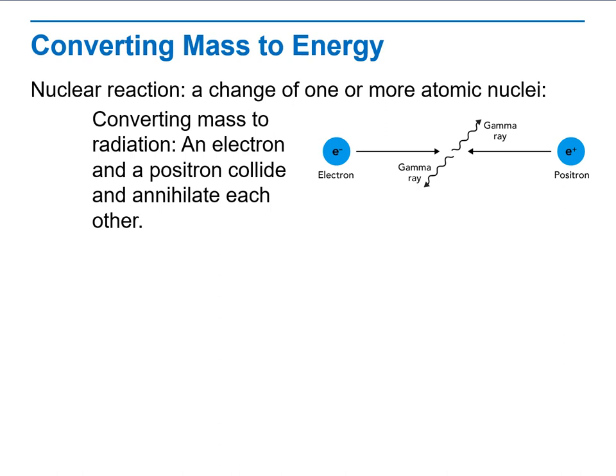Mass is converted to electromagnetic radiation when an electron and positron collide. How does the energy of these two gamma rays compare to the masses of the electron and positron? The combined energy of the two gamma rays is equal to the combined mass of the electron and positron.